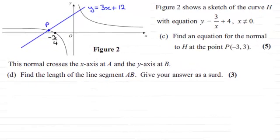Hi, now in the previous part of the question we had to find the equation of the normal to the curve H at the point P with coordinates minus 3, 3. And this is not drawn to scale but we found that the equation was y equals 3x plus 12.